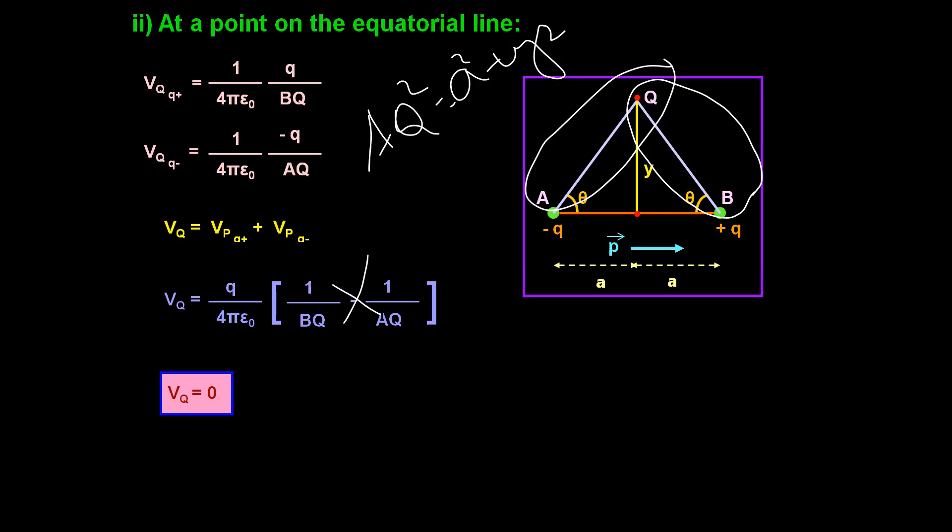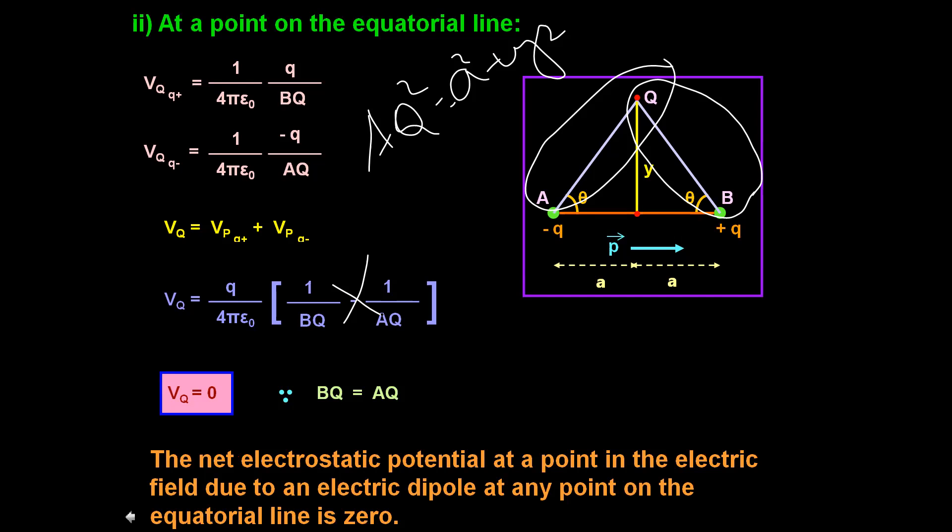So the potential at point Q — which lies on the equatorial plane — will be equal to zero. To summarize: potential at the axial point is (1 / 4πε₀) × p / (x² − a²), whereas potential due to an electric dipole at the equatorial point is zero.